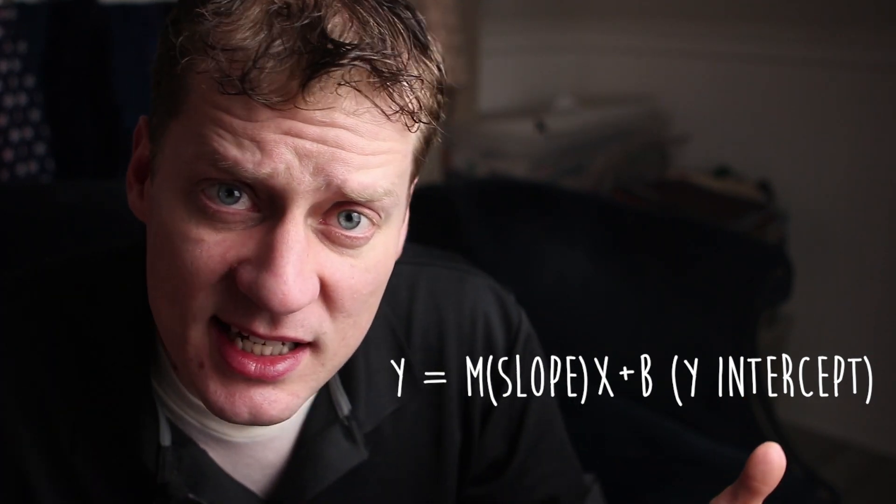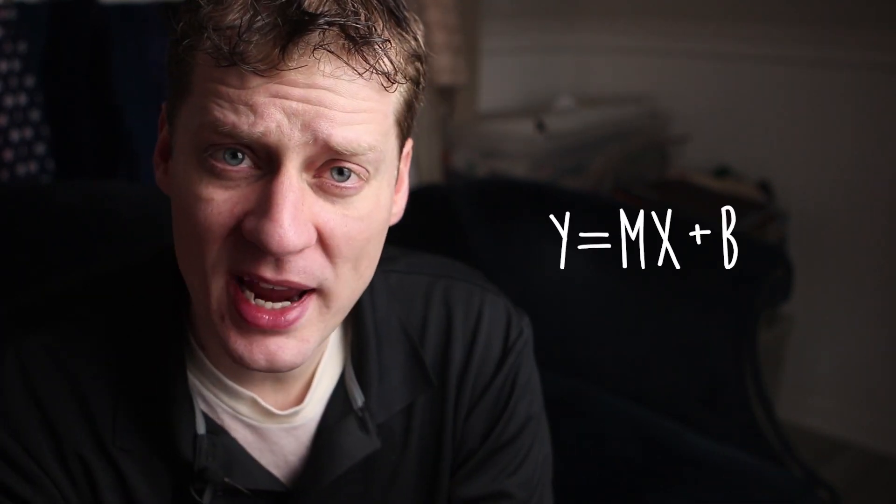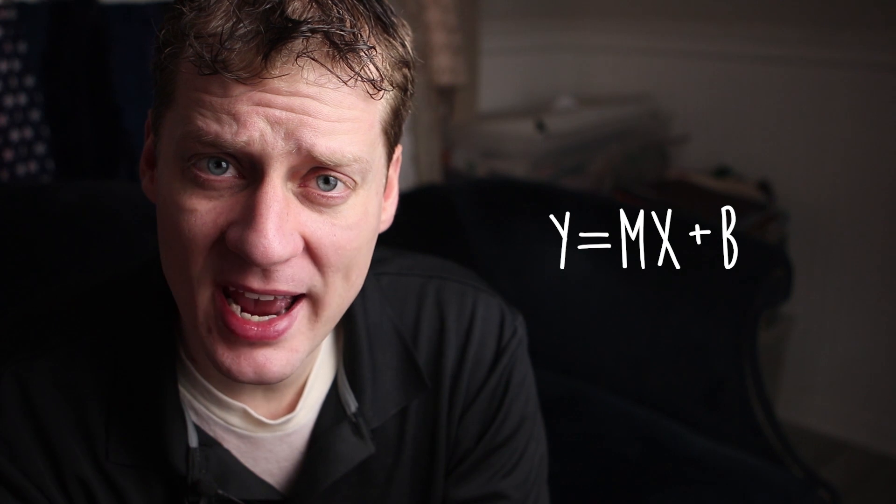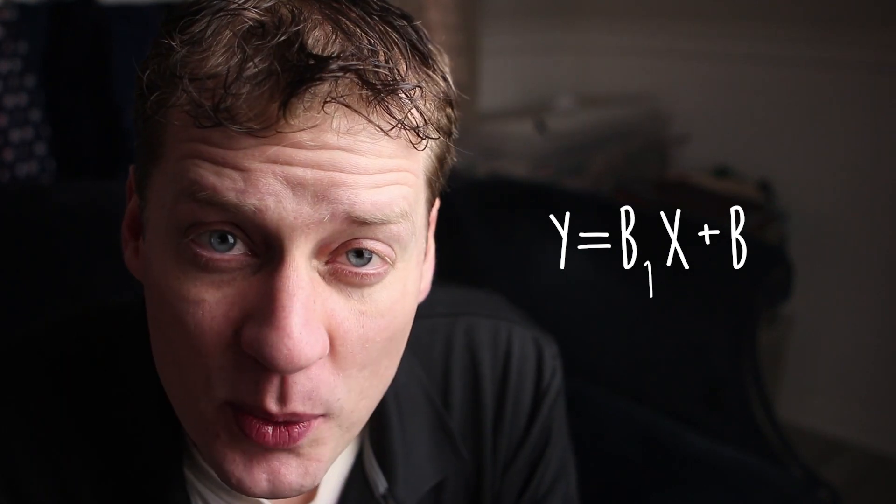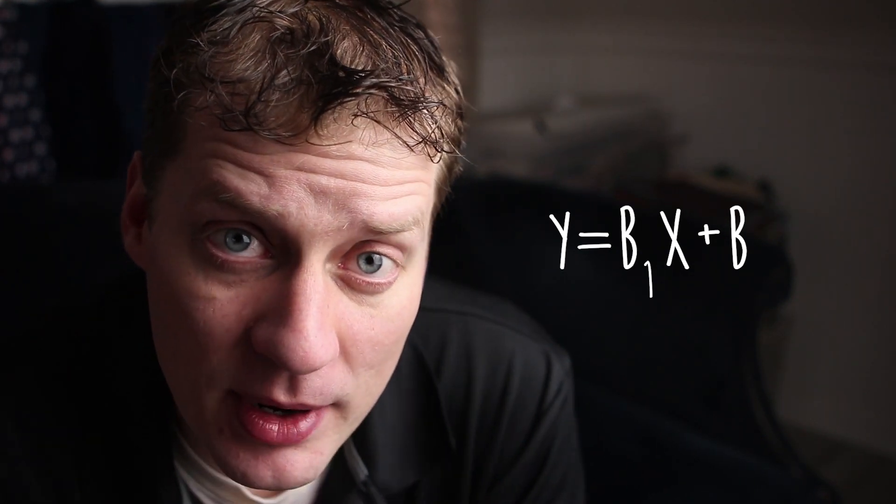It's all the same in statistics. So before we had m, now we have b1. And before we had b, now we have b0. Or if you are super sophisticated, you say we've got beta-naught and beta-1, but only if you're real fancy and stuff.